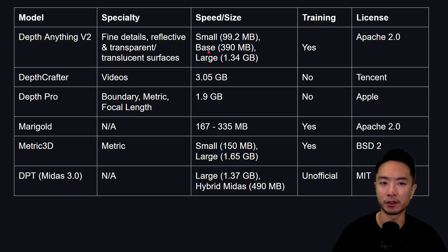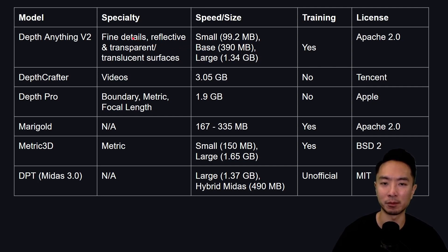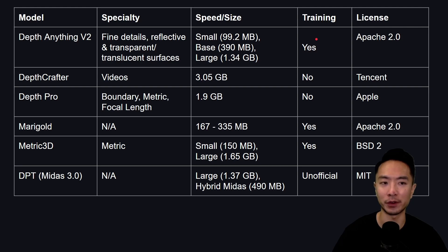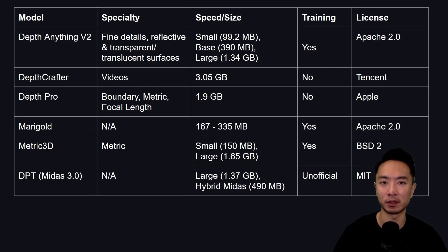Here's a table summarizing all the models by specialty, speed, size, training, and license. For specialty, choose the one best for your application. For speed and size, model size was provided since actual speed depends on your hardware. For training, if the off-the-shelf model doesn't work and you need to fine-tune it, training support is an important factor. For license, whether you're going commercial or non-commercial will be a very important consideration.